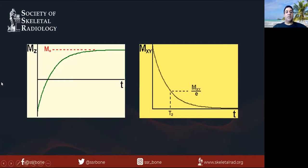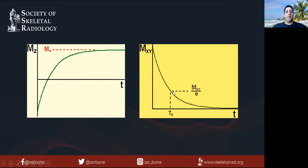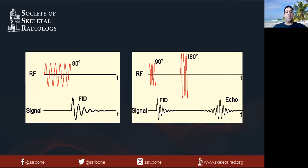This is how the relaxation curves look. Basically, there's a gain back of the longitudinal magnetization where it gets to two-thirds of the original value — that's called the T1 time of a tissue. And there's a fall of the transverse magnetization that falls to one-third of the original value — that's the T2 time of a tissue.